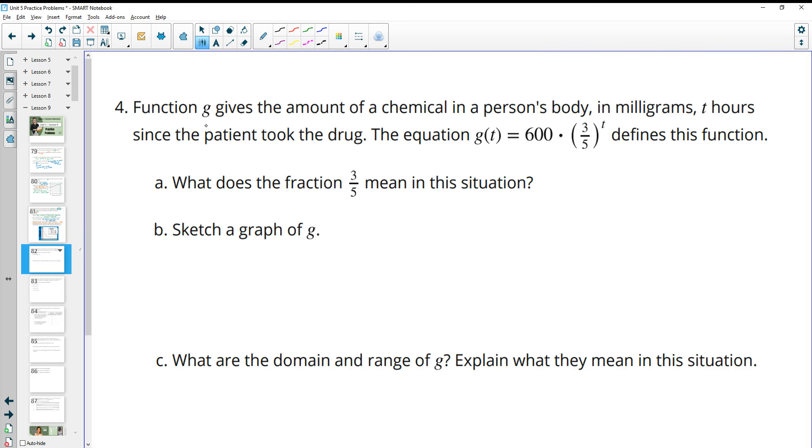Number four, function G gives the amount of chemical in a person's body in milligrams T hours since the patient took the drug. The equation G of T equals this defines the function. What does the fraction three-fifths mean in this situation? It means each hour, three-fifths of the chemical remains. Or each hour, the chemical that remains is reduced by three-fifths.